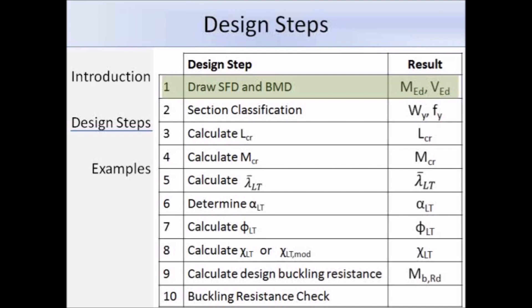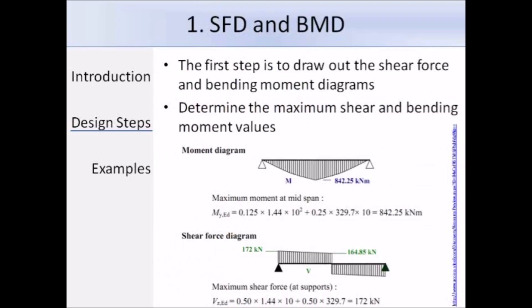Step 1 is to draw the shear force diagram and the bending moment diagram, and as a result of this step, you would have the value of the design moment and the design shear force. This step is not exclusive to lateral torsional buckling and will have already been carried out when checking the beam against bending and shear, both of which are covered in the Restrained Beams lecture. This screenshot from the Exo Steel website clearly shows the maximum moment M_ED and the maximum shear force V_ED.